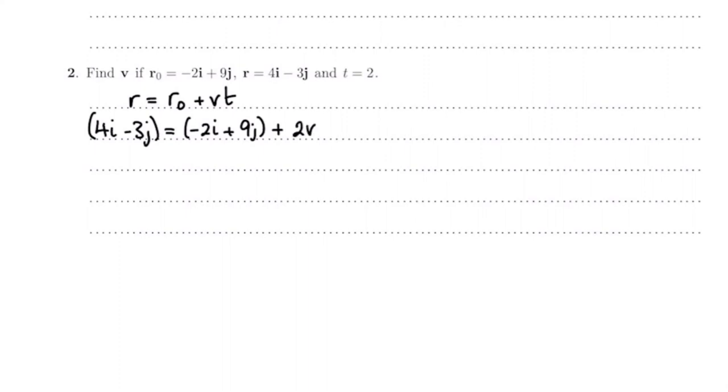If I then rearrange that, you can see I get 2v equals 6i minus 12j. Therefore divide by 2 and we get v equals 3i minus 6j, and of course that's meters per second.